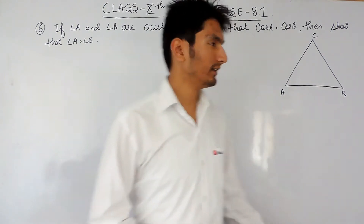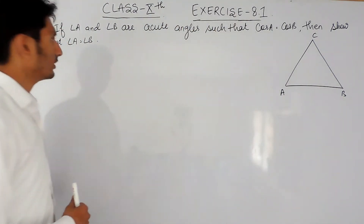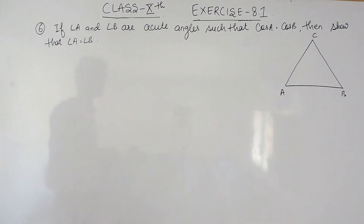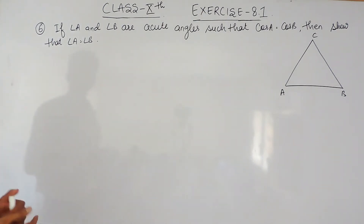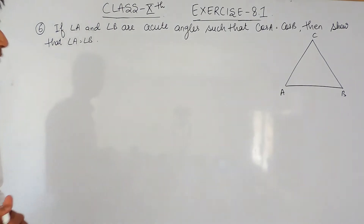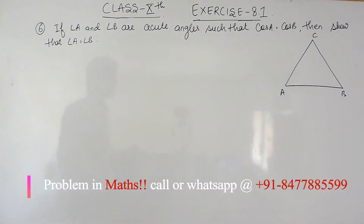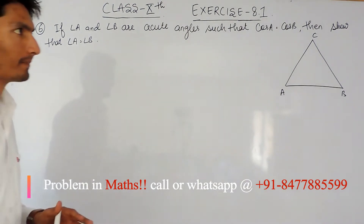Hello everyone. In this video we are going to solve question number 6 of exercise 8.1. The question says: if angle A and angle B are acute angles such that cos A is equal to cos B, then show that angle A is equal to angle B.